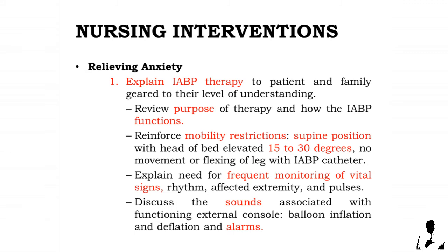Nursing interventions: the first is relieving anxiety. Explain IABP therapy to the patient and family, geared to their level of understanding — review the purpose of therapy and how the IABP functions; reinforce mobility restrictions (supine position, head of bed elevated 15 to 30 degrees, no movement or flexing of the leg with the IABP catheter); explain the need for frequent monitoring of vital signs, rhythm, affected extremity, and pulses; and discuss the sounds associated with the functioning external console, balloon inflation and deflation, and alarms.